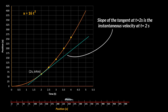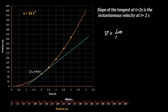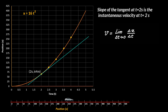The slope of this tangent at t = 2 seconds is called the instantaneous velocity at 2 seconds. In a more general way, instantaneous velocity at any time t equals the limit of delta s upon delta t as delta t approaches 0. Note that delta t is not equal to 0, because then delta s upon delta t would become undefined. So delta t is approaching 0, or is almost 0, and the short way of writing this expression is dx upon dt — the first derivative of x with respect to t.